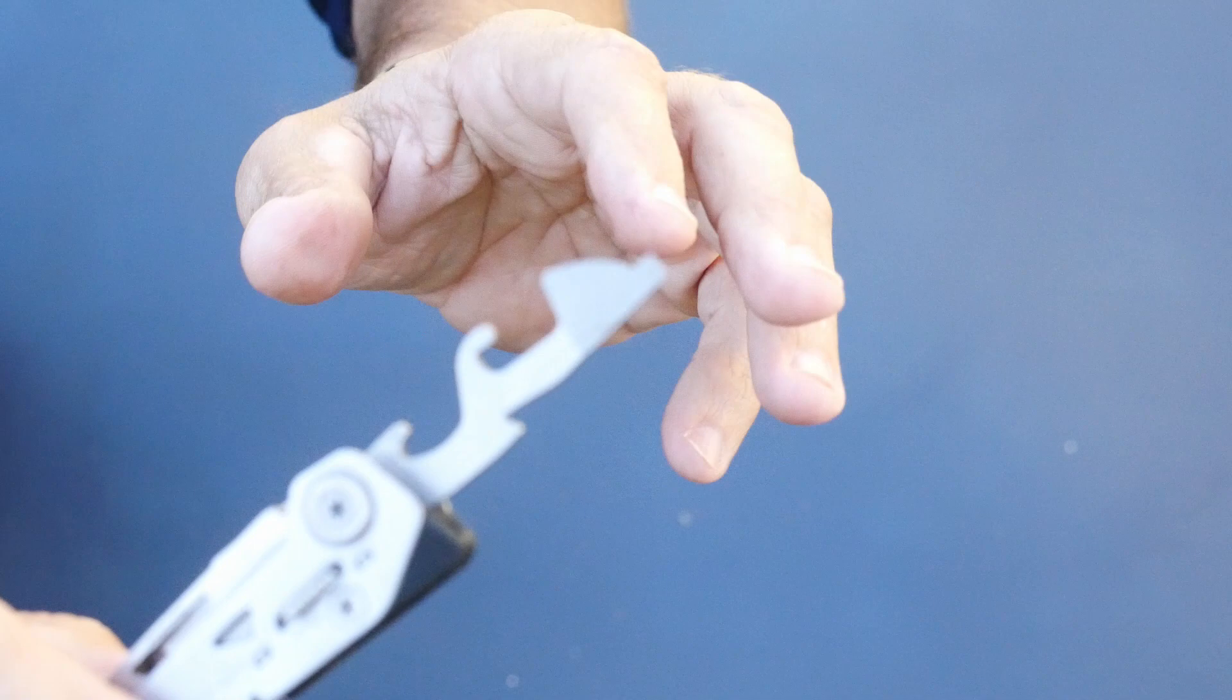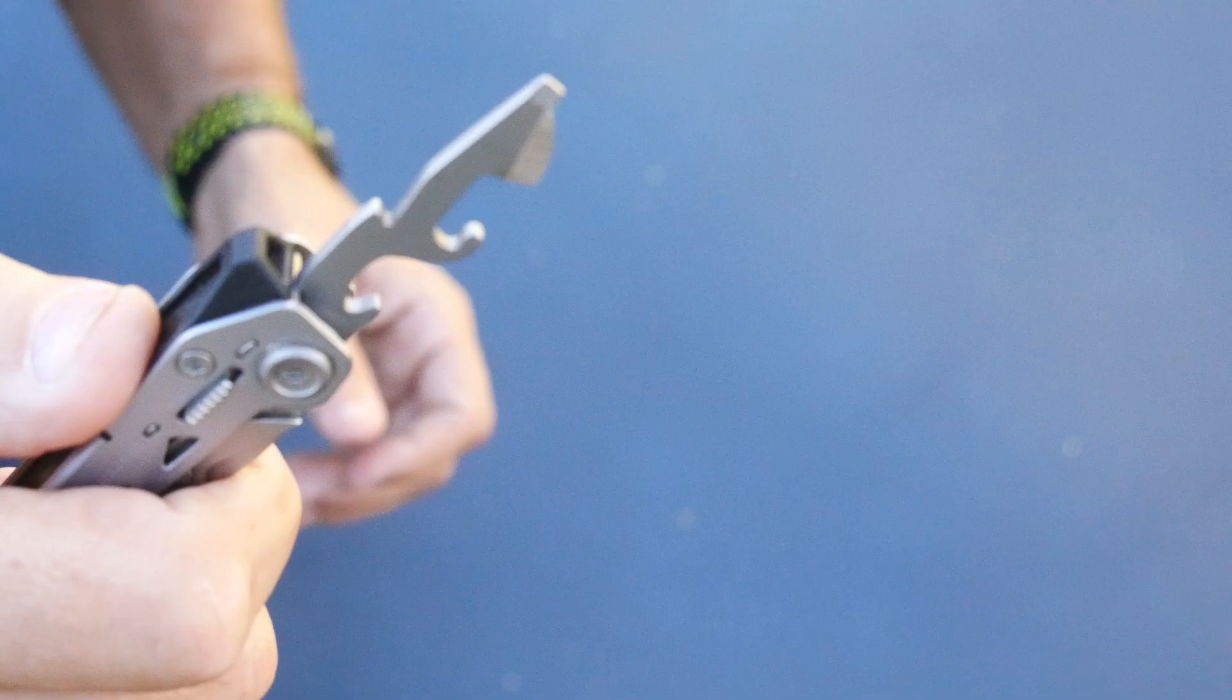The other tool I opened up has a large flathead and what they're calling a wire stripper right here. And I will put that to the test. This is their half serrated edge, 2-inch blade, and that's really sharp right out of the factory.